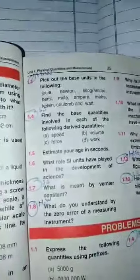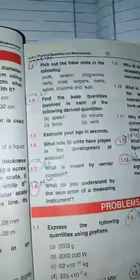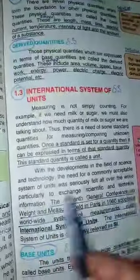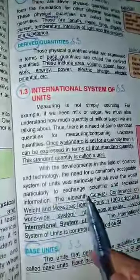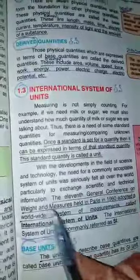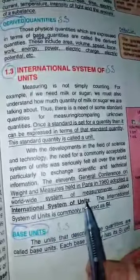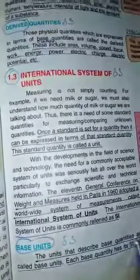Then we move to question number 5: what role have SI units played in the development of science? The 11th General Conference on Weights and Measures held in Paris in 1960 adopted a worldwide system of measurements called International System of Units. The International System of Units is commonly referred to as SI.